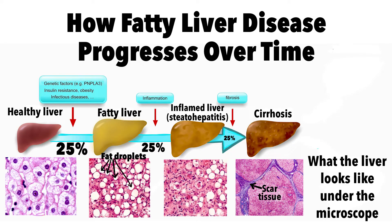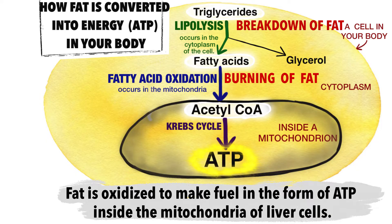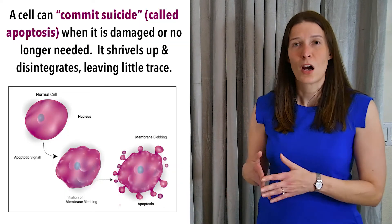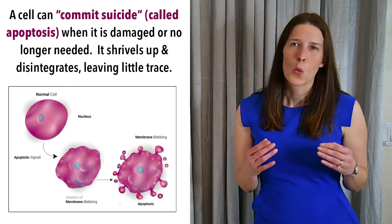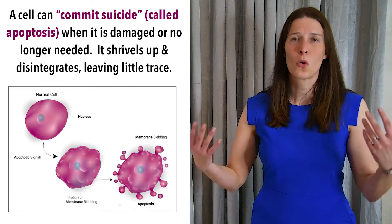Unfortunately, as fat builds up over time, it eventually impairs the function of the liver. Mitochondria, the tiny power generators inside liver cells, become overloaded while trying to process all this fat to make energy. This causes inflammation and injury in the liver. Hepatocytes, or liver cells, are triggered to commit suicide — apoptosis — which then leads to more inflammation.